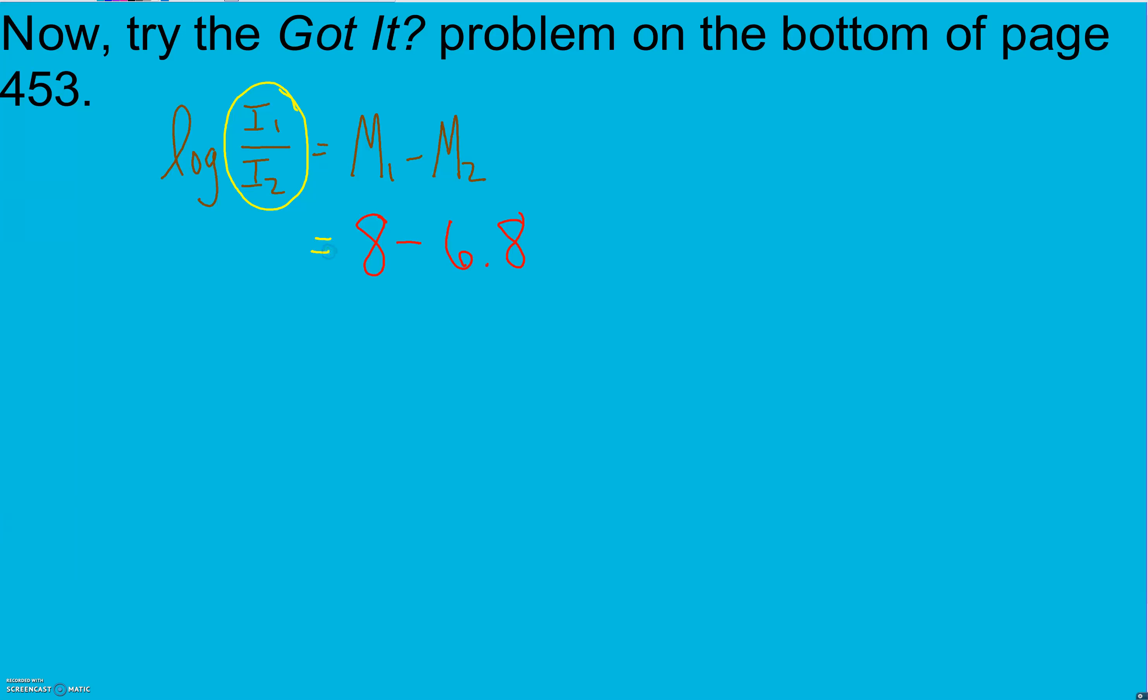How many times more intense was it? We don't need the individual I values. We want to know how many times more intense was it. So we want that ratio. In order to solve this, we need to switch to exponential form. Once we simplify here, we get base 10. Our exponent, once we simplify, is this 8 minus 6.8, which is 1.2. And again, it's log base 10 when we don't have one. Equals our intensity ratios. Now, take 10 raised to the 1.2 power and we get 15.8489. I'm going to go ahead and say that that's approximately 16 times as intense.